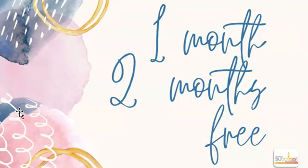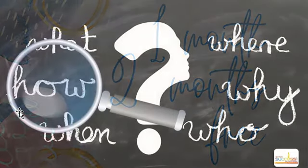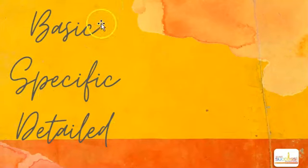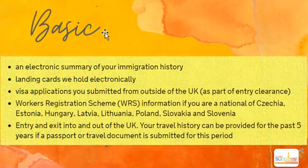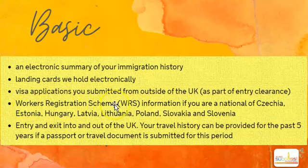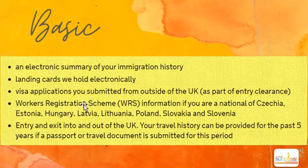How can you request a copy of your file? First, you need to decide what type of information you would like to get. There are three types of information you can request from the home office: basic, specific, and detailed. The basic request is where you would like a copy of the electronic summary of your immigration history, copies of your landing cards where held electronically, copies of visa applications submitted from outside the UK, information on the EOVCA registration scheme if you are a national of Czechia, Estonia, Hungary, Latvia, Lithuania, Poland, Slovakia, or Slovenia, and entry and exit information.